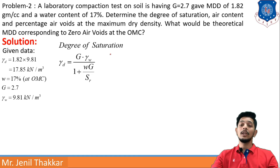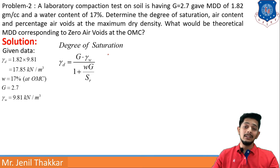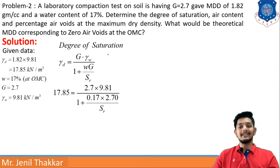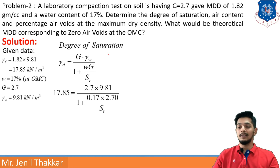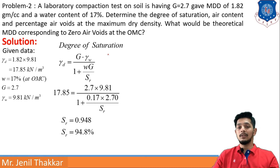First, I find the degree of saturation using γd = G·γw / (1 + wG/Sr), derived from index properties and relationships. Substituting γd = 17.85, G = 2.7, γw = 9.81, w = 0.17 (remember to divide percentage by 100), Sr comes out as 0.948 — so the degree of saturation is approximately 94.8%.